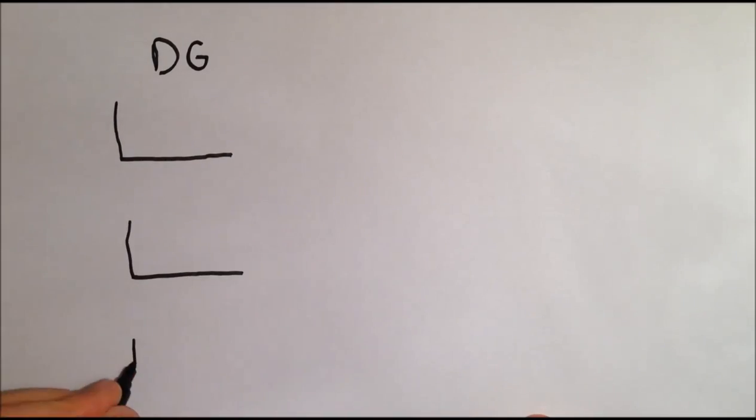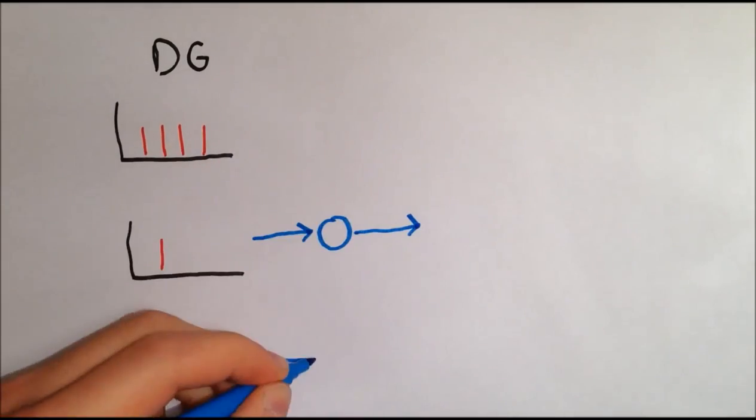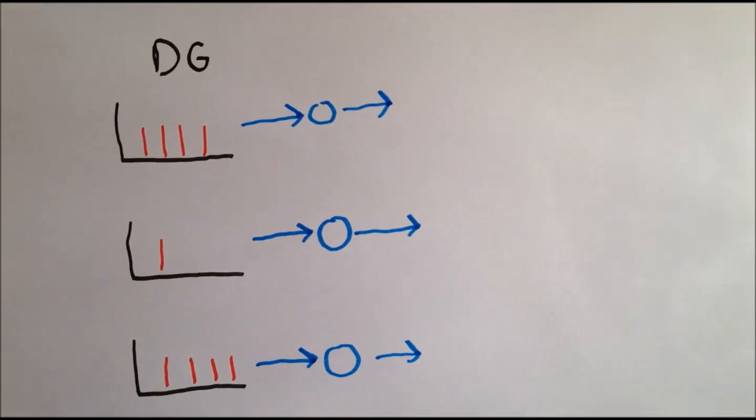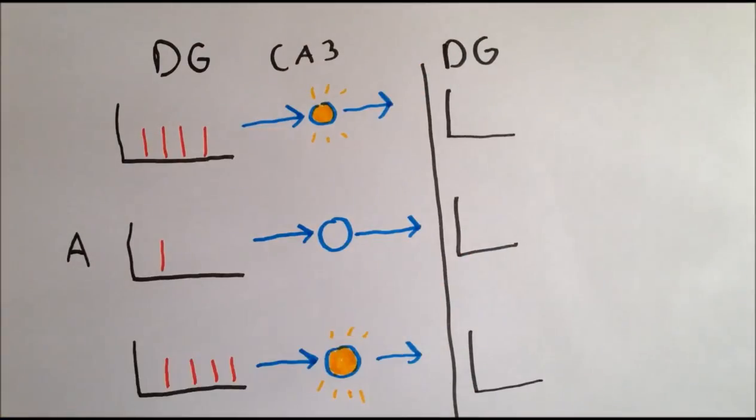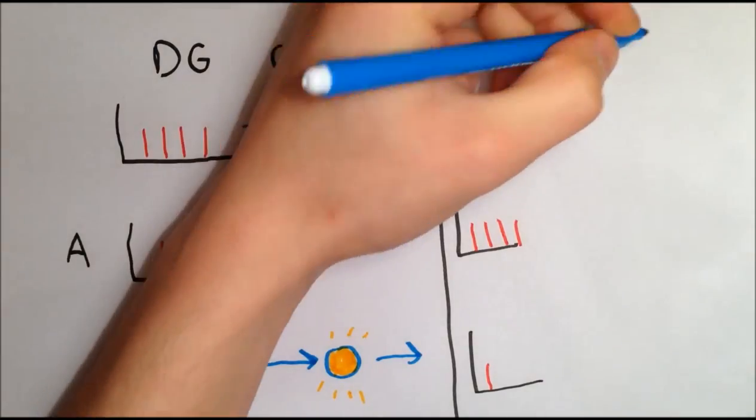Differences in spiking frequency are another possibility. The higher frequency a dentate gyrus neuron fires, the more neurotransmitter it releases and the more likely it is to activate the downstream CA3 neuron.